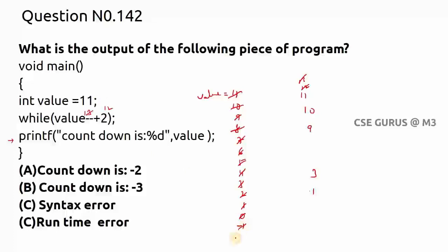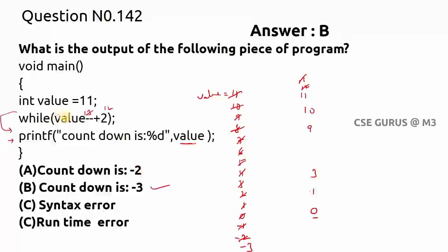When value is -2: -2 + 2 = 0, so the condition is 0 and the loop exits. But before exiting, value-- is executed, making value -3. So the printed value is -3. The output is 'countdown is -3', and option B is correct. When value is -2 it comes out of the loop, but the post-decrement makes it -3.